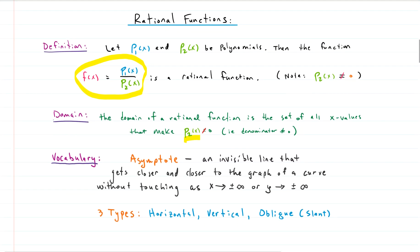Let's talk about that weird word asymptote. What is an asymptote? In layman's terms, it's an invisible line that gets closer and closer to the graph of a curve without touching it as either X approaches positive or negative infinity, or Y approaches positive or negative infinity. There are three types of asymptotes: horizontal, vertical, and oblique — oblique are often called slant asymptotes, and that's the word I'll use most often in this video.